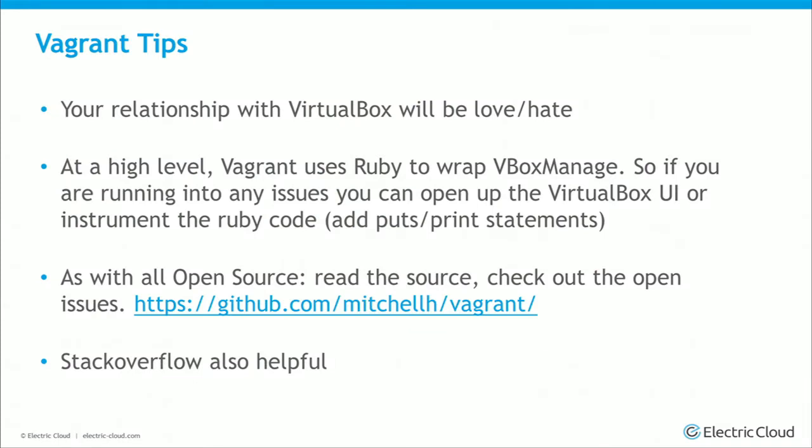The tips I'd give from our experience: your relationship with VirtualBox will be love-hate. Particularly on Windows, there are still a lot of bugs — I don't think it's really on Vagrant; Vagrant is just wrapping VBoxManage. I've run into issues where private networks can't be seen on the same private network on Windows, and then it fails to attach that network to the VM. Luckily it's open source — you can add print statements to debug. But if you are promoting this within your organization, you should feel comfortable with debugging these kinds of issues.